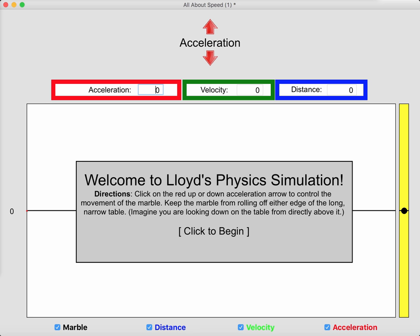So let me just show you how it works. You can see the little welcome screen there. It says to click on the red up or down acceleration arrow to control the movement of the marble, which is this little black dot over here. And it says to keep the marble from rolling off either edge of the long, narrow table. Imagine you were looking down on the table from directly above. So this yellow skinny rectangle here is the table, and we kind of have a bird's eye view. Let's click to begin.